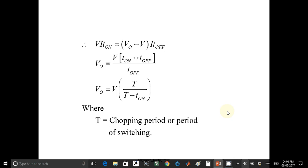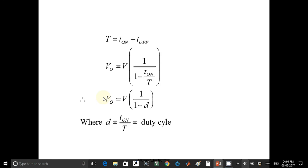So we are going to have the output voltage equation. V output is equal to V into T upon T minus T on, where T is equal to chopping period or period of switching. In other words, if we rearrange the equation, we get V output is equal to V into 1 upon 1 minus D, where D is equal to T on upon T is equal to duty cycle.